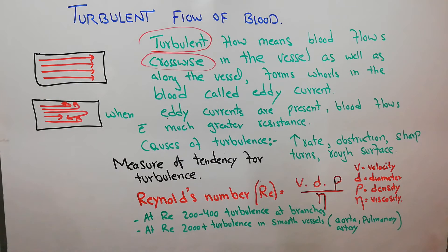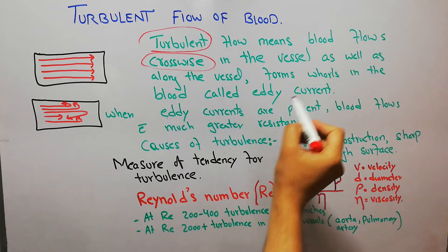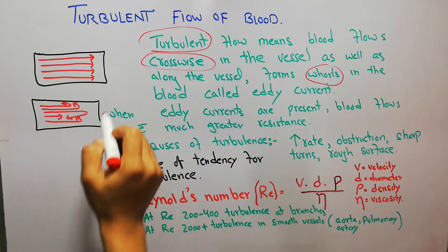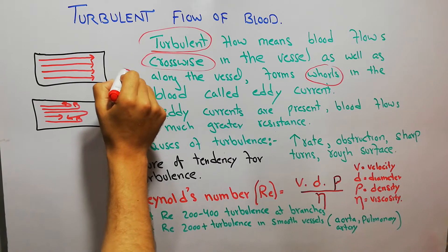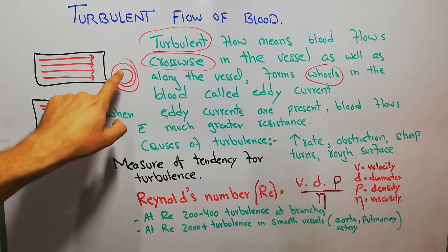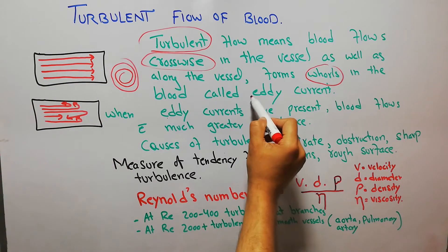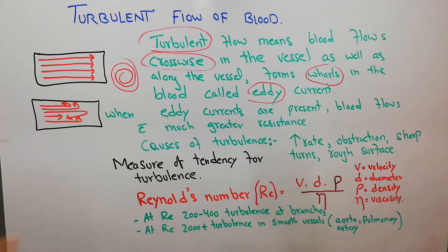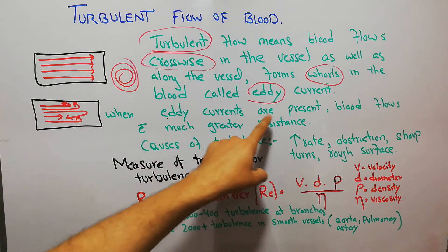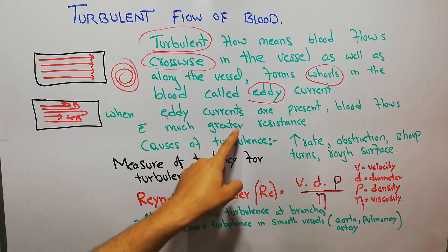That is known as turbulent flow, and due to the turbulence, whorls are formed. Whorls are any spiral movement of the fluid. When these whorls are formed in the blood, they are known as eddy currents. When eddy currents are present, blood flows with much greater resistance.